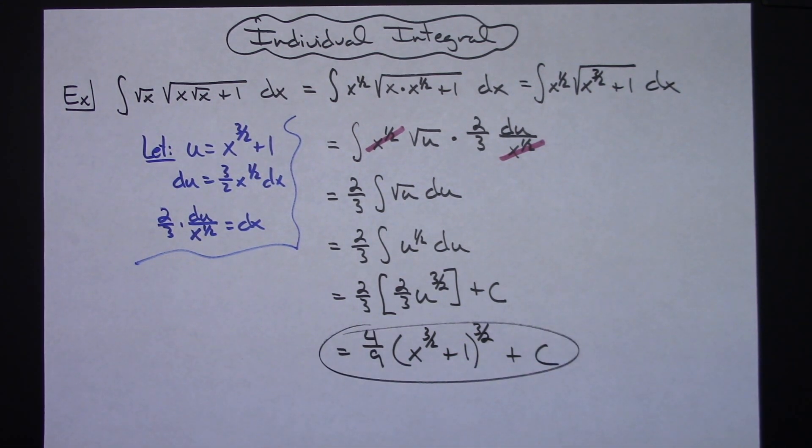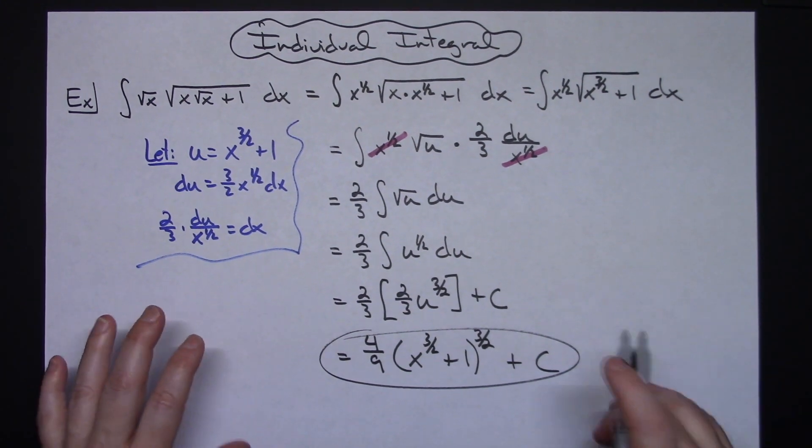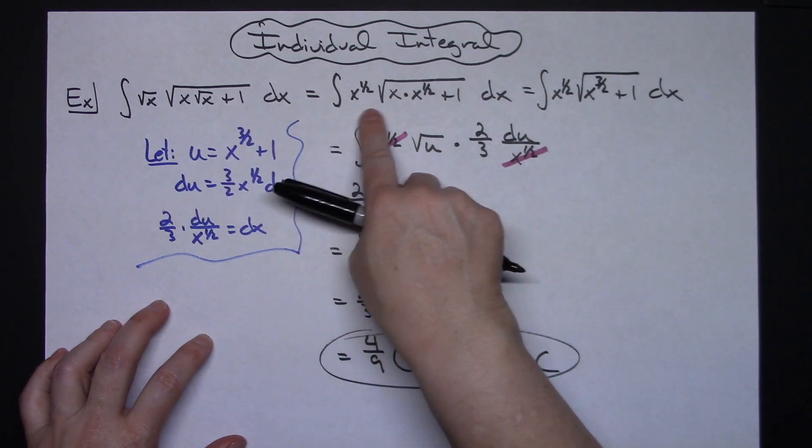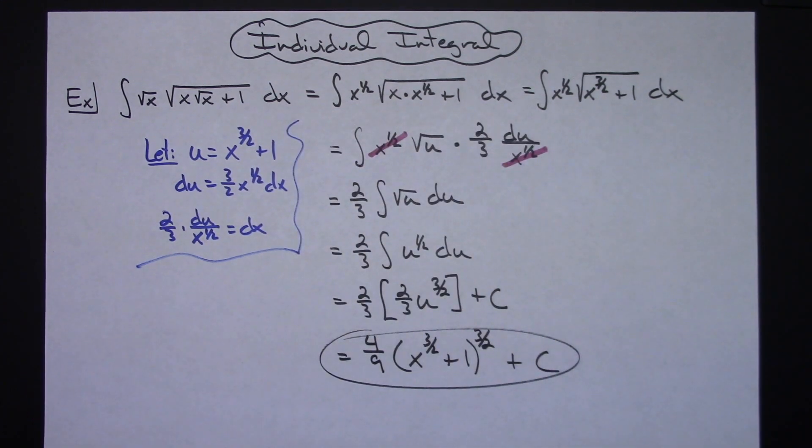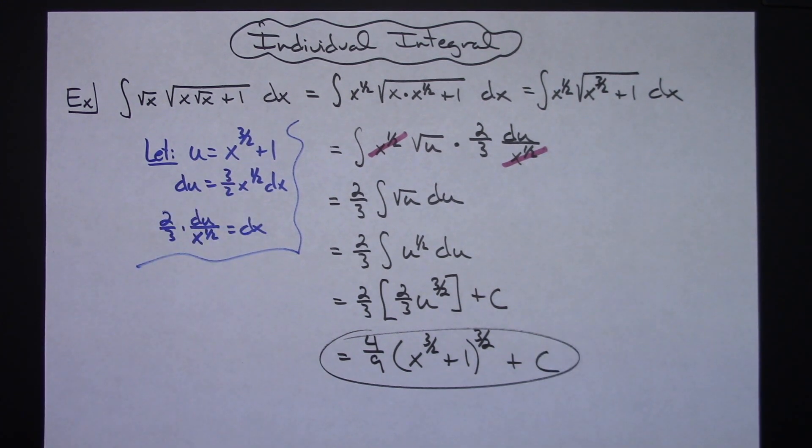So overall really just a straightforward u substitution but before you could get to that u substitution just a little bit of manipulation on that original equation so that it could easily see what that u needs to be for a u substitution.